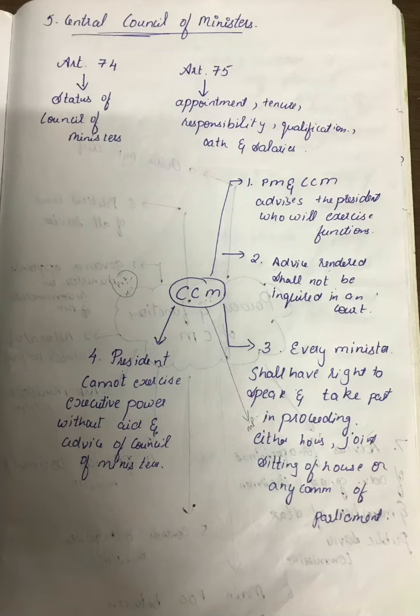The second thing is that the advice rendered shall not be inquired in any court. That means the president cannot file a complaint stating that this advice was given by this minister and that minister, saying 'I am not responsible.' There is nothing like that because advice rendered shall not be inquired in any court — you cannot go to court and file a case because it is a confidential relationship between the CCM and the president.